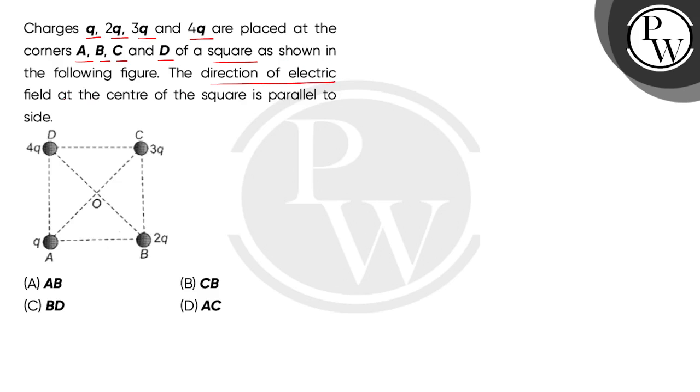The direction of electric field at the center of the square is parallel to the side. So children, we have given this diagram of a square, which is named by the vertices A, B, C and D.